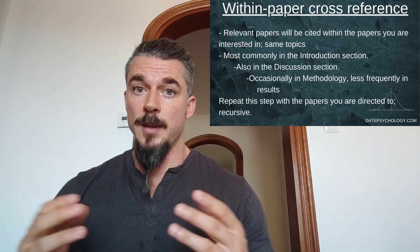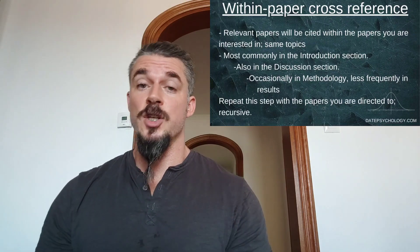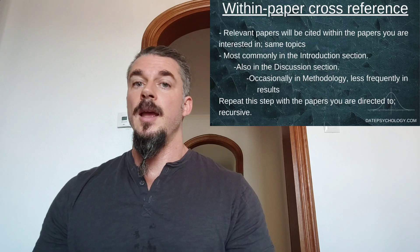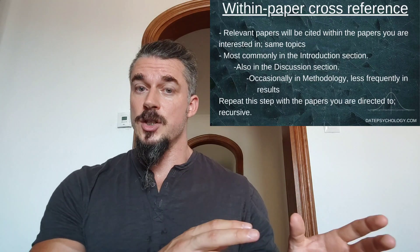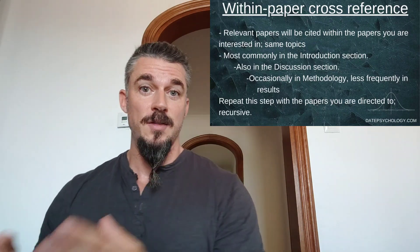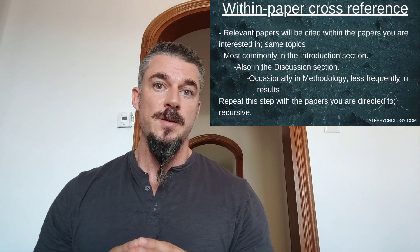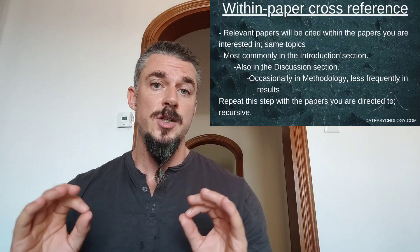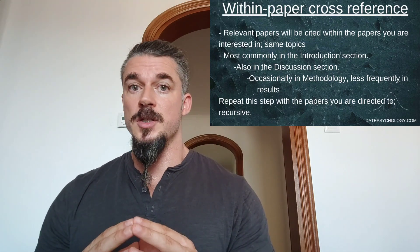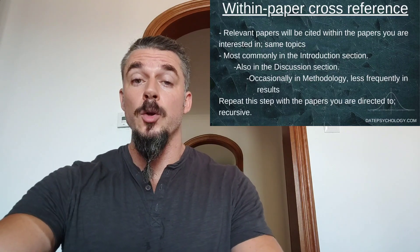The second most common place to see references when cross-referencing other papers is in the discussion section, at the very end of the paper. A quick tip: a lot of people read papers front to back, but it's actually really good if you read the discussion first, then the introduction, then the methodology, then the results. If you're looking to collect a list of sources on a specific topic, check the introduction first — it's going to give you a lot of references. Check the discussion next. Check the methodology, especially if you're looking for anything related to methodology within that field or designing an experiment yourself and need to know what statistical methodology to select.